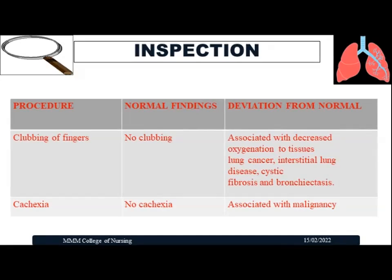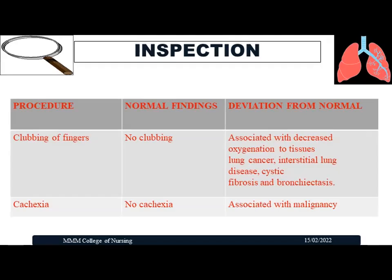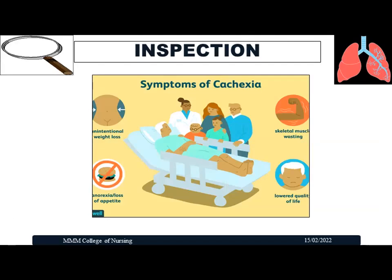Another finding to identify during inspection is cachexia — abnormal muscle wasting. Normally no cachexia is present. Cachexia involves sudden weight loss, anorexia, skeletal muscle wasting, and a lowered quality of life. It may be associated with malignancy such as lung cancer. We need to look for all these signs during inspection as part of the respiratory assessment.